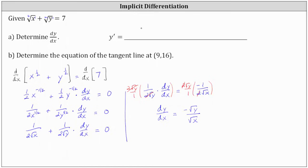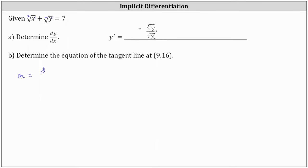Now that we have y prime or dy/dx, we can determine the slope of the tangent line at the point 9 comma 16. The slope of the tangent line is equal to the derivative function evaluated at the point 9 comma 16, which means we substitute 9 for x and 16 for y in the derivative function. This gives us negative square root 16 divided by square root 9, which simplifies to negative 4 thirds.